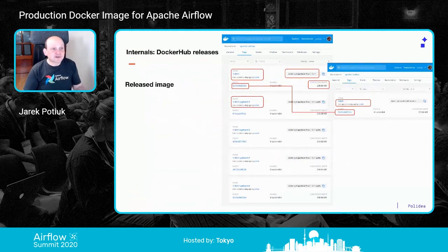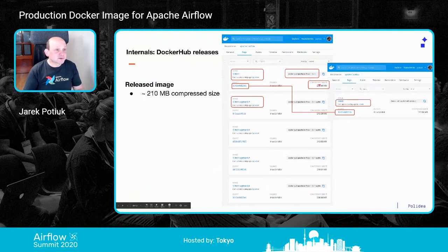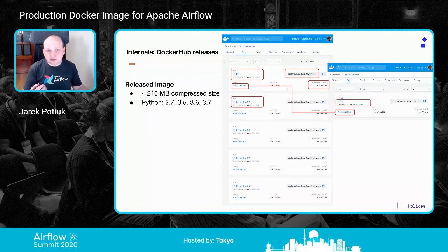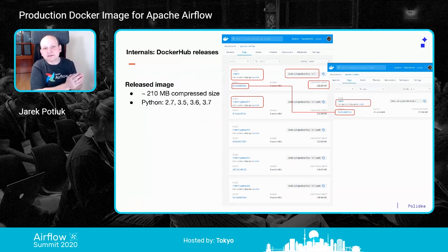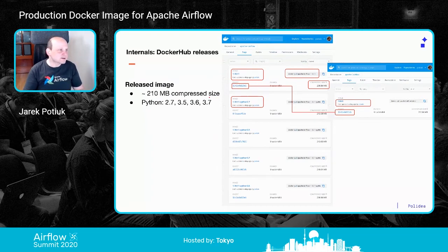Interestingly, both master and the stable 1.10 branch can be used to build any 1.10 version of Airflow. With master you might get new features, but it will still use the same released Airflow from PyPI if you build it properly. If you're adventurous, choose master; if you want stability, use the stable branch. Now, a few words about the internals.